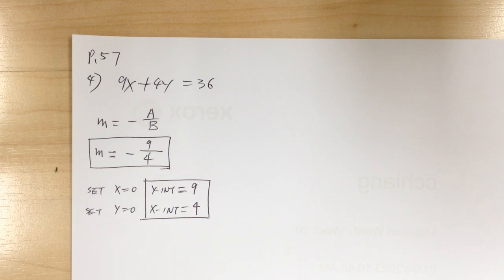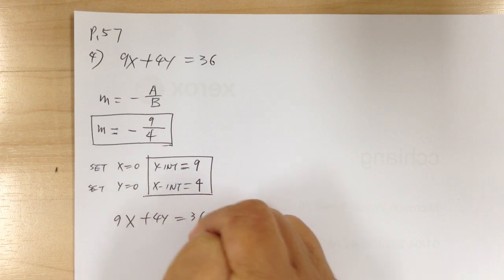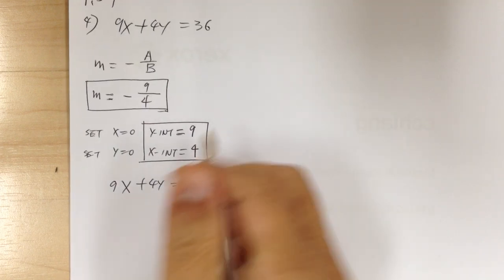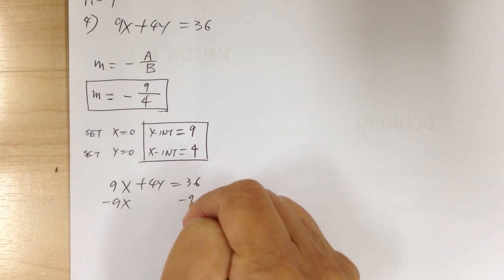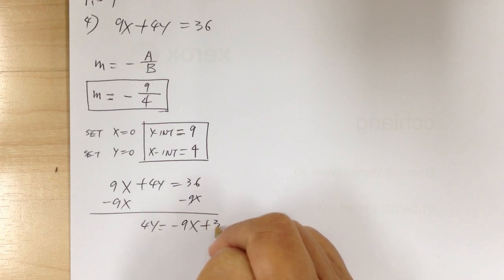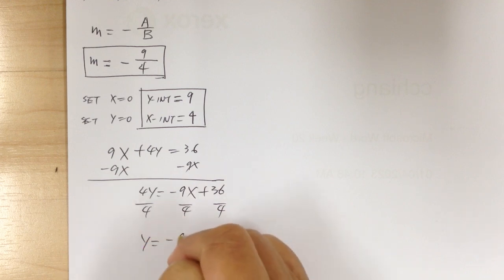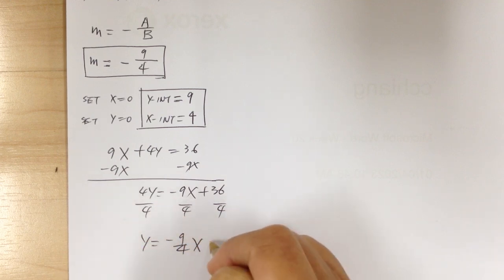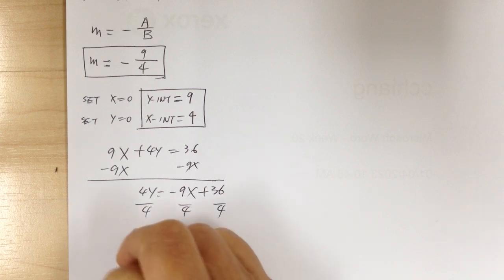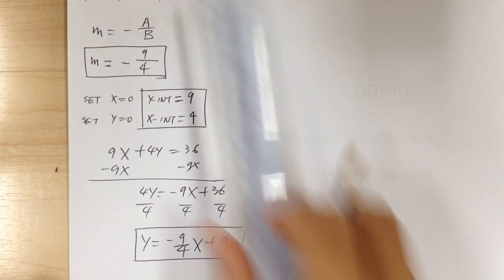Now reduce to slope-intercept form. Starting with 9x plus 4y equals 36, subtract 9x from both sides to get 4y equals negative 9x plus 36. Divide everything by 4, so y equals negative 9 over 4 times x plus 9. This is the equation in slope-intercept form.